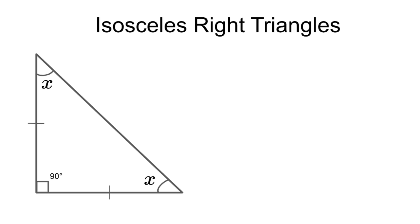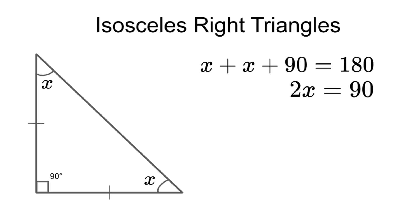We know that the sum of all angles should be equal to 180 degrees, and we calculate that each angle equals 45 degrees.